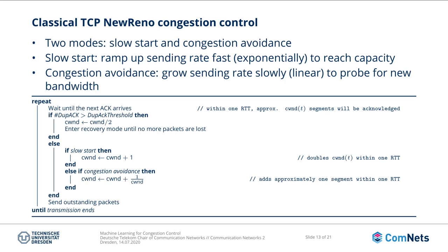In congestion avoidance, we grow the sending rate slowly — only linearly over time — to probe for new bandwidth. The reason is that other source nodes might stop their transmission and free up bandwidth at the bottleneck link that is now available for us, so we cannot just keep the sending rate at the same level; we want to utilize this newly freed bandwidth in case it is there. After these manipulations to the congestion window are done, the TCP socket continues to send out the outstanding packets if the congestion window allows it. This is the control loop that keeps going until the transmission ends because the application has no more data to send.